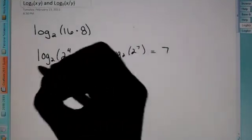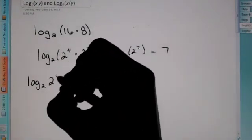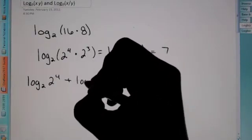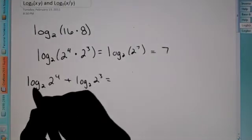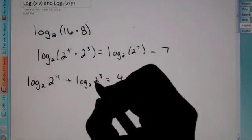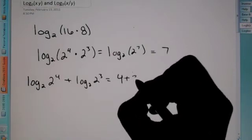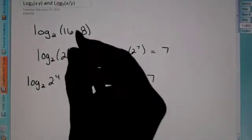Well, if we were to break these up, say log base 2 of 2 to the 4th plus log base 2 of 2 to the 3rd, we'd end up with, again, these cancel out, you're left with the logarithm 4, this one ends up being 3, which is 7 also. So, this just proves that we can actually break up the logs.